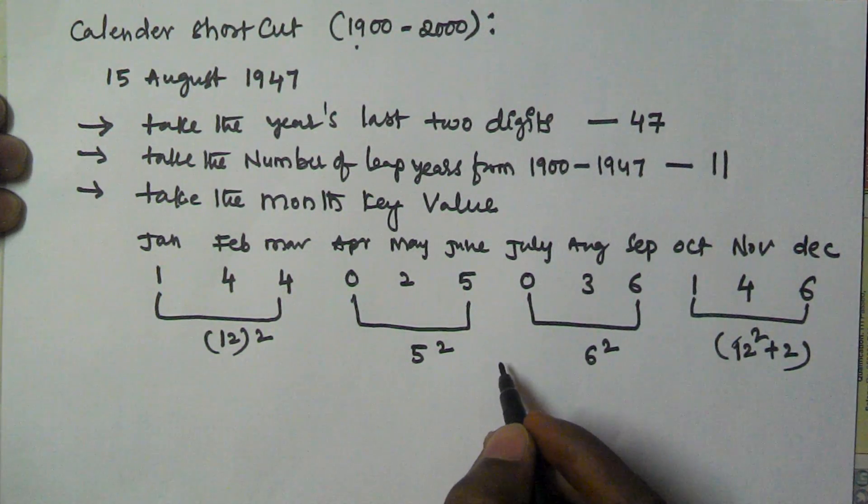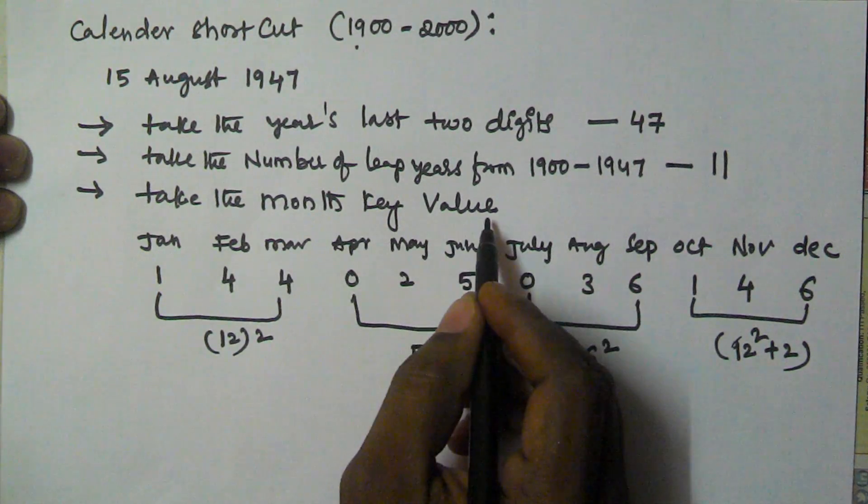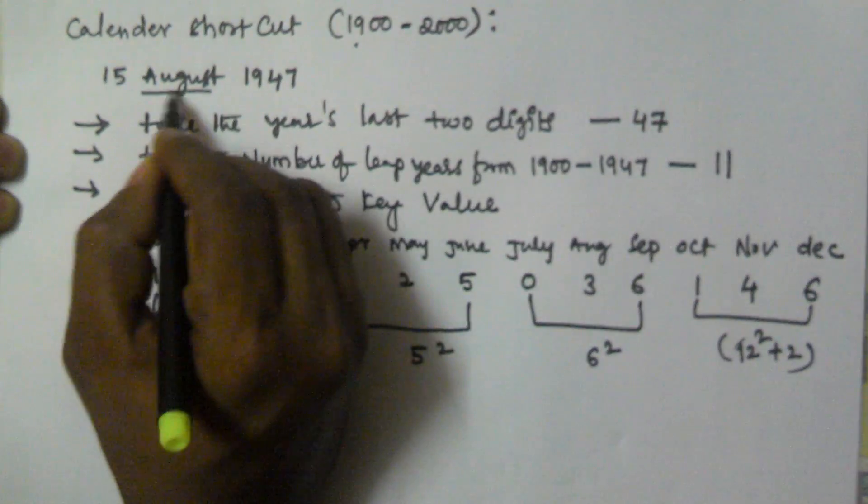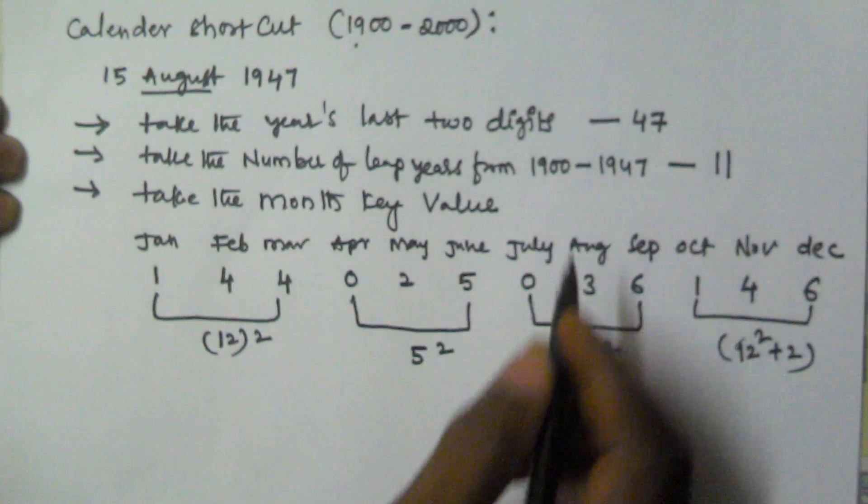Now take the month key value. The given month is August, so August month key value is 3.